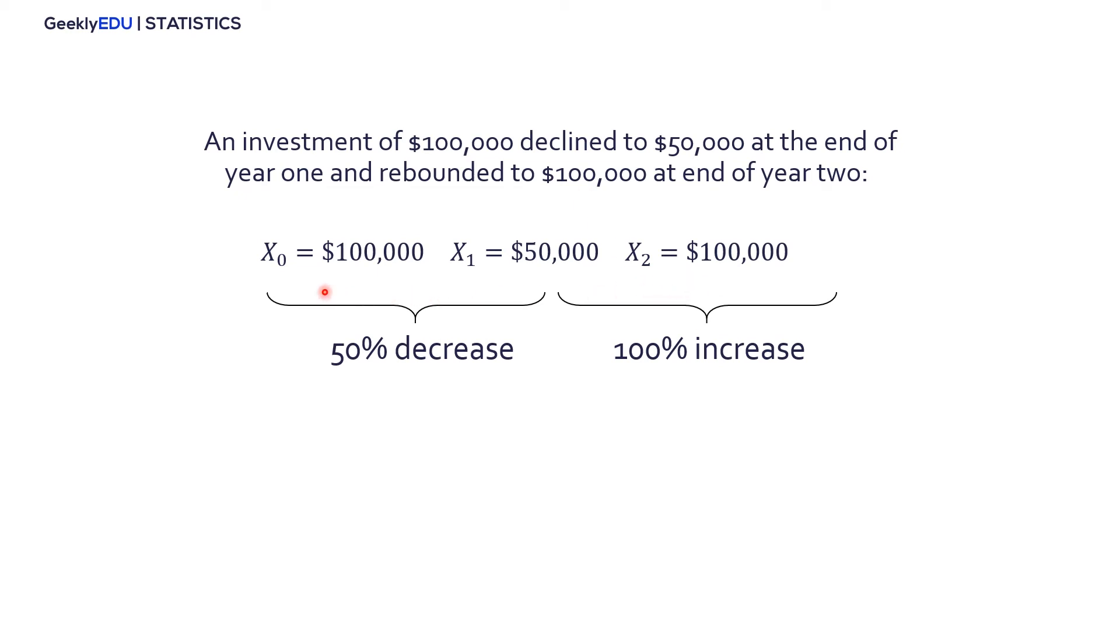So, as we look here, the initial investment from $100,000 drops to $50,000. That's a 50% decrease. It's cut in half. But then, from the end of year 1 to the end of year 2, it doubles. It goes from $50,000 up to $100,000. So, when anything doubles, that's a 100% increase.